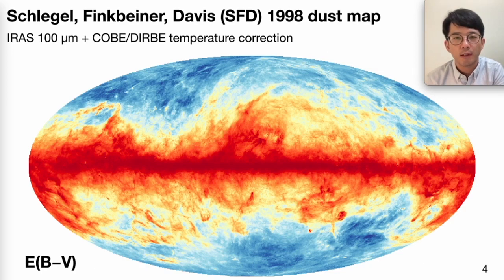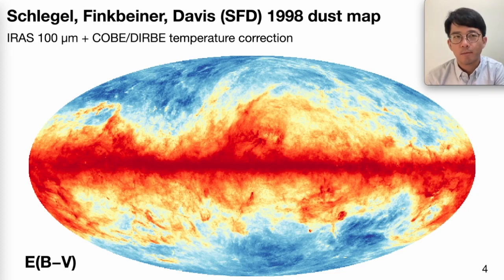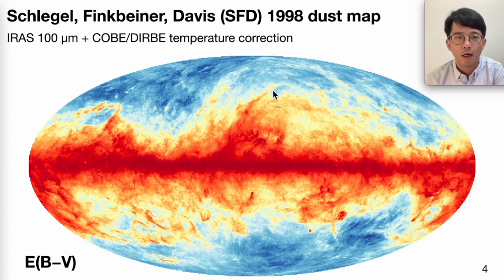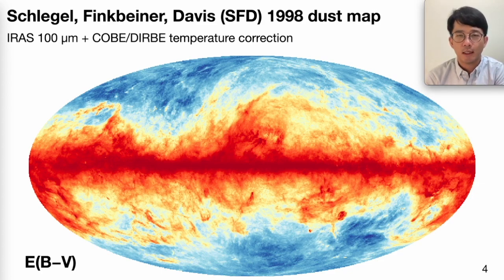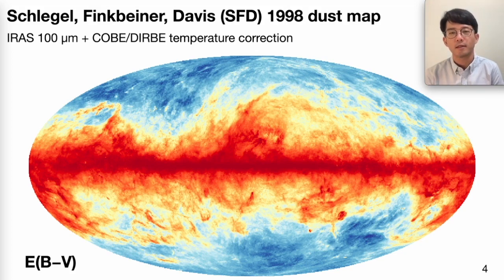The most widely used Milky Way dust map has been the Schlegel, Finkbeiner, and Davis, or SFD, dust map. It is constructed mostly using the IRAS 100-micron intensity map, with a minor temperature correction using COBE-DIRBE data. We can see strong galactic gradients in E(B-V), with beautiful dust cirrus on high latitudes. The typical reddening value at high latitude is about 20 millimagnitudes. SFD has been instrumental for observational cosmology and astronomy in the optical, UV, and near-infrared. The angular resolution is about 6 arcminutes, and for the most part SFD is already very accurate and high signal-to-noise.